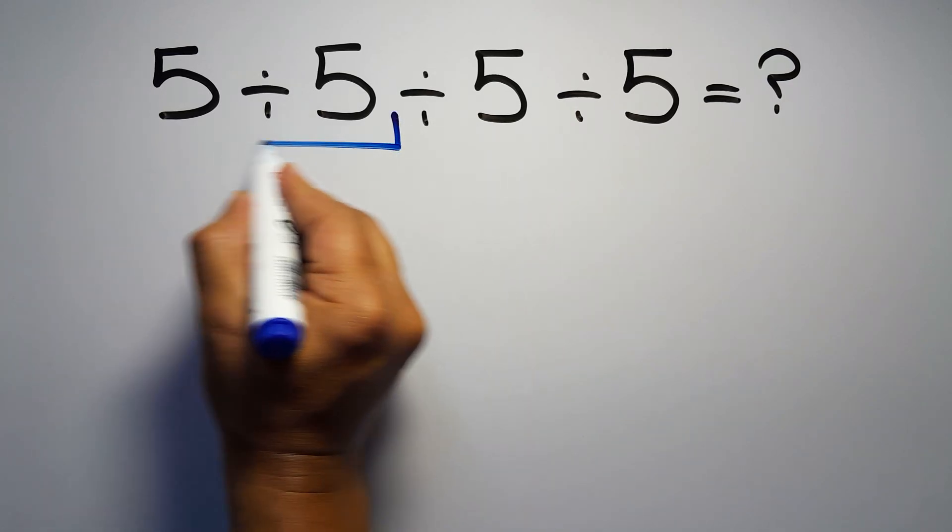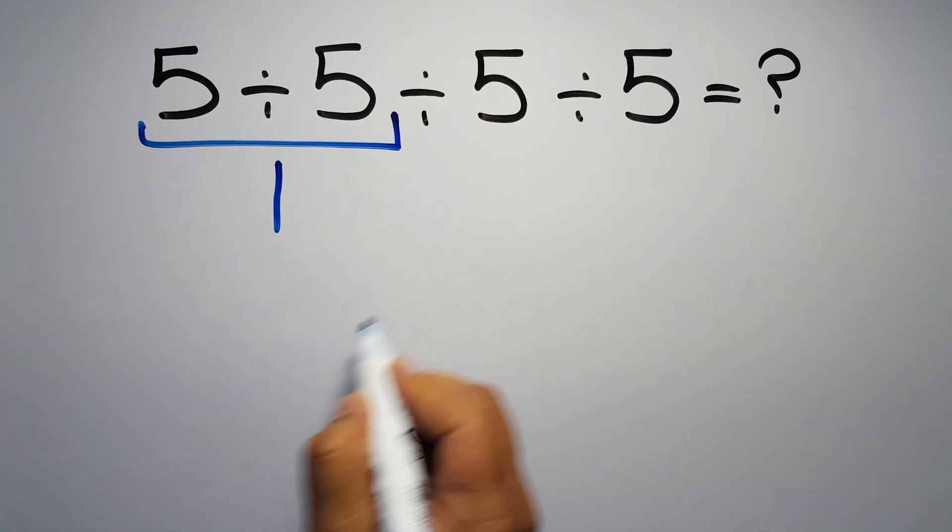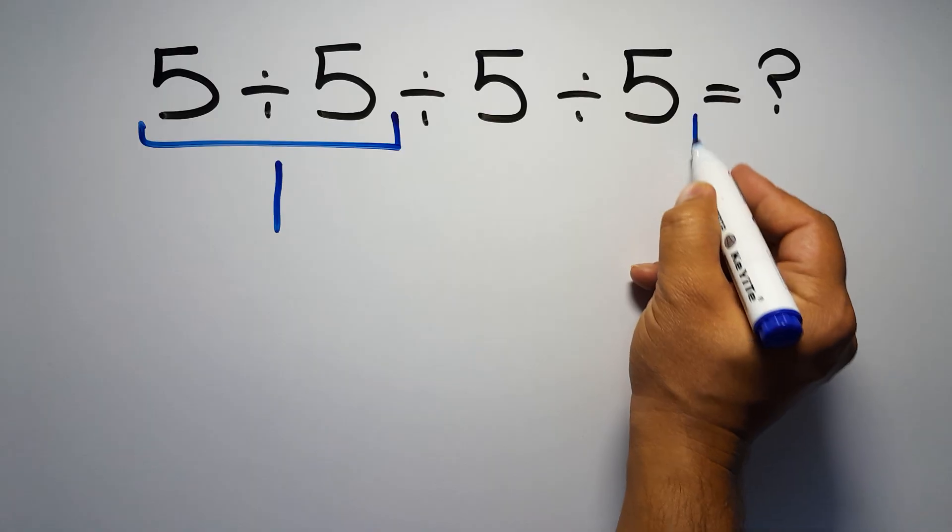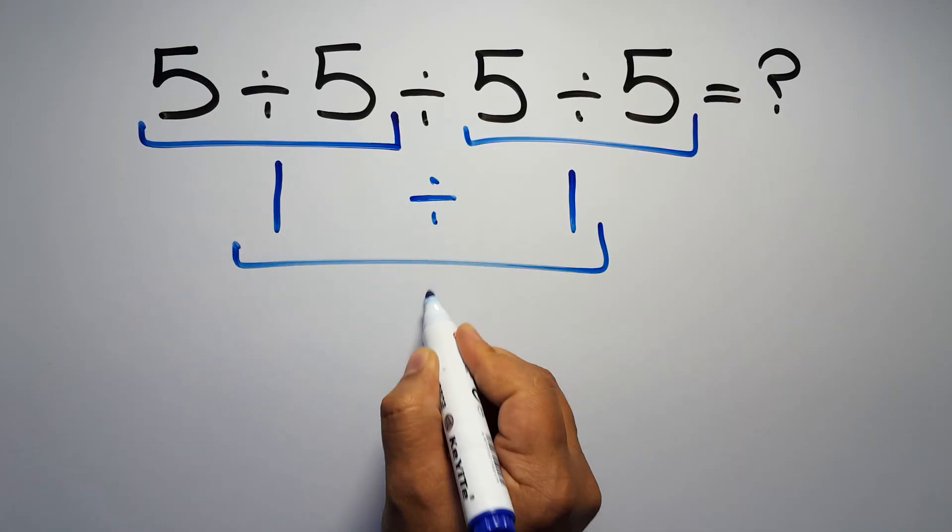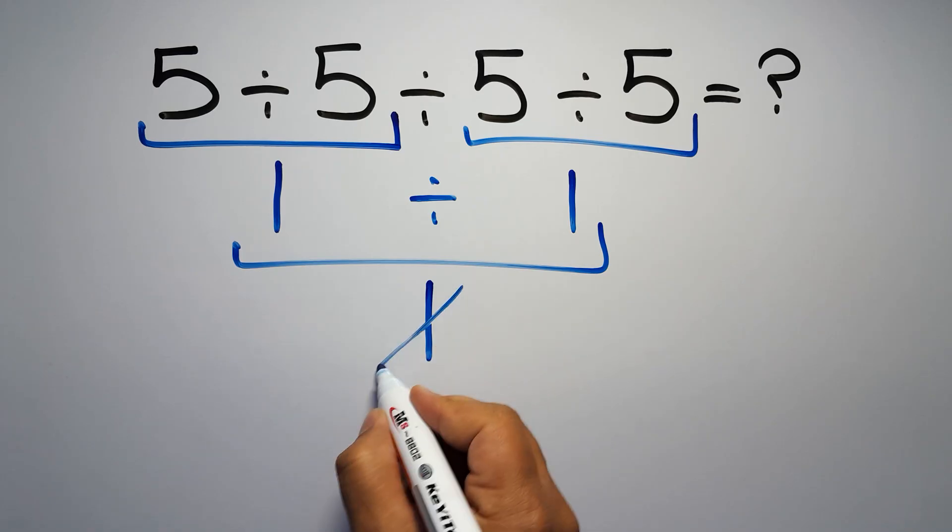5 divided by 5 gives us 1. And again here we have 5 divided by 5. So 1 divided by 1 is just 1. But this answer is not correct.